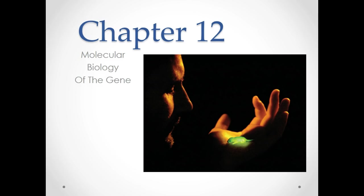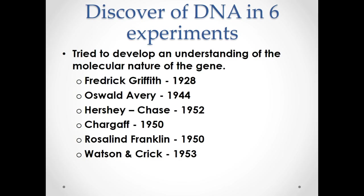From that double-stranded molecule of life arises every single protein on the planet and ultimately every single expressed trait. We're going to talk about the discoveries that led to our understanding of DNA. There are five key experiments. Rosalind Franklin and Watson and Crick worked around the same time — 1950 to 1953 — and their discoveries led to the same thing: a three-dimensional model of DNA.